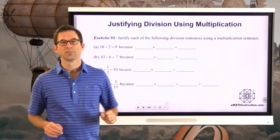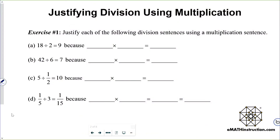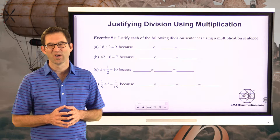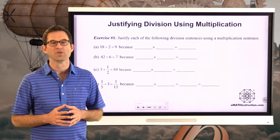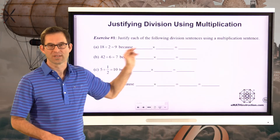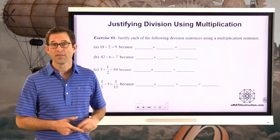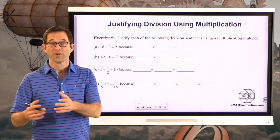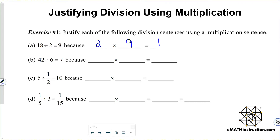Let's justify some division using multiplication. In exercise number one, we have the following: justify each of the following division sentences using a multiplication sentence. A sentence in math is kind of an equation that you just sort of state as a fact. Like, 18 divided by 2 equals 9 — that is a division sentence. The reason that 18 divided by 2 is equal to 9 is because 2 times 9 is equal to 18.